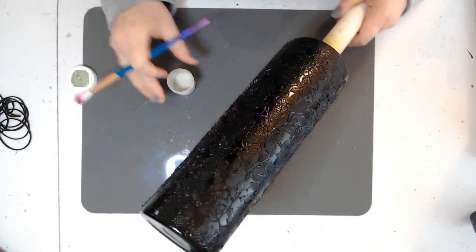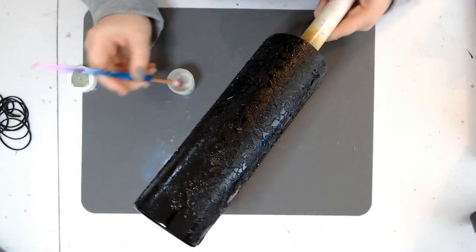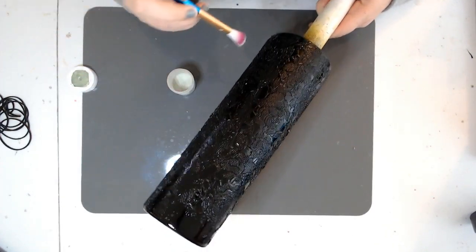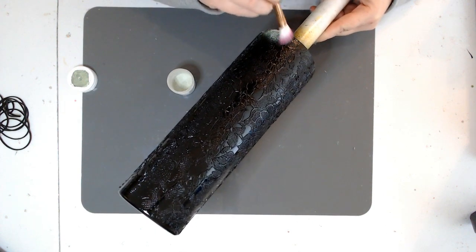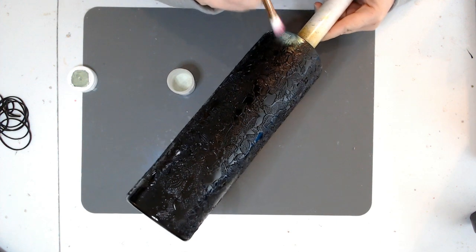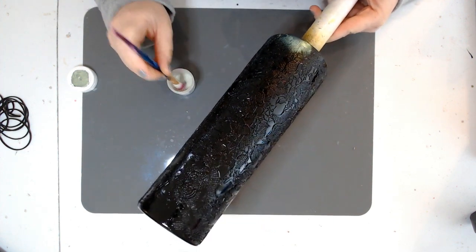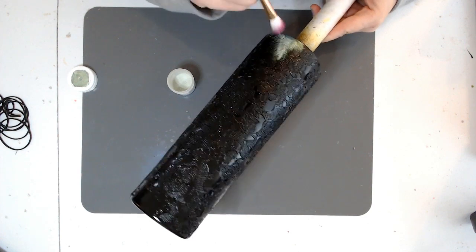I think I let it dry for maybe 10 minutes, maybe not even 10 minutes, maybe five minutes, and it wasn't long enough because once I started to paint on or to brush on my mica powders, some of the paint started to smear a little bit. You'll see that in a second, so I just had to wait another five minutes or so to let the paint dry a little bit longer.